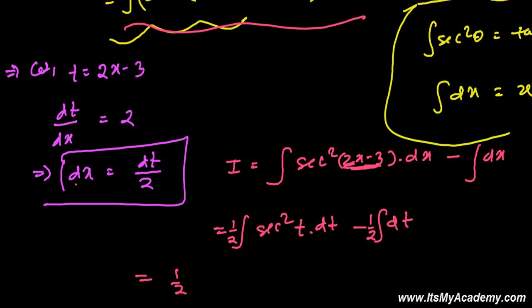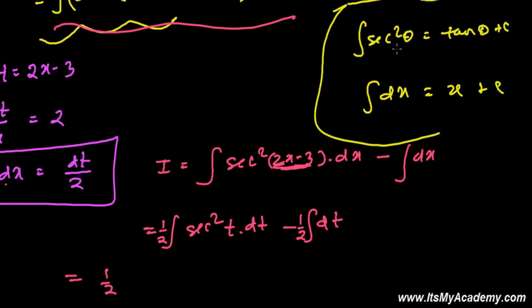Now 1 by 2, as I told you the formula, the sec square theta integration of sec square theta is tan theta plus constant, right? So it's going to be simply tan, and theta is t here, plus some constant, let's say constant 1. And again minus half integration of dt is simply t, you know, simply t plus some constant 2.